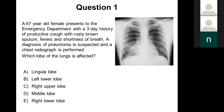Seventy-two percent of people said D the middle lobe, 26% said E the right lower lobe, and 3% said the lingular lobe. The answer here is what the majority of people thought — it is the middle lobe. When we look at the chest radiograph, we can see in the right middle or lower part of the lung field this patchy shadowing, patchy opacification.